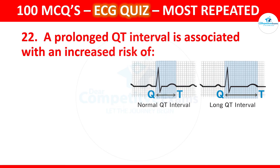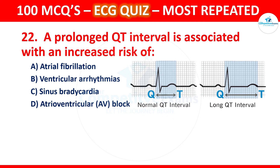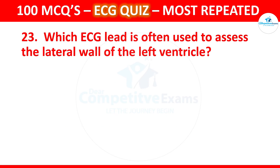Question 22: A prolonged QT interval is associated with an increased risk of which condition? Options are atrial fibrillation, ventricular arrhythmias, sinus bradycardia, or atrioventricular (AV) block. The correct answer is ventricular arrhythmias. A prolonged QT interval increases the risk of ventricular arrhythmias, potentially leading to life-threatening conditions.